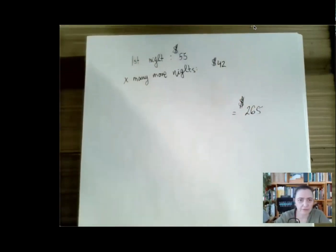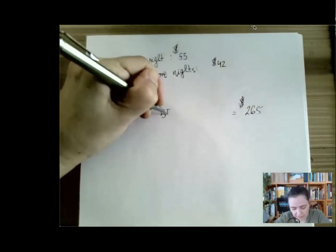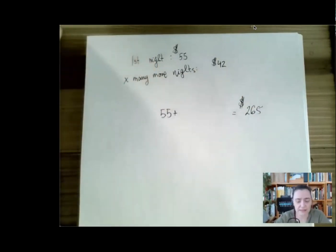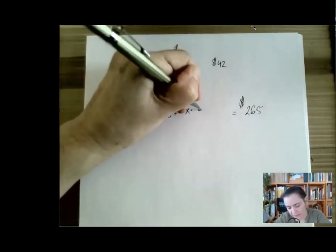And what did we pay for? Well, we paid for the first night, and then for X many nights, X many times $42.